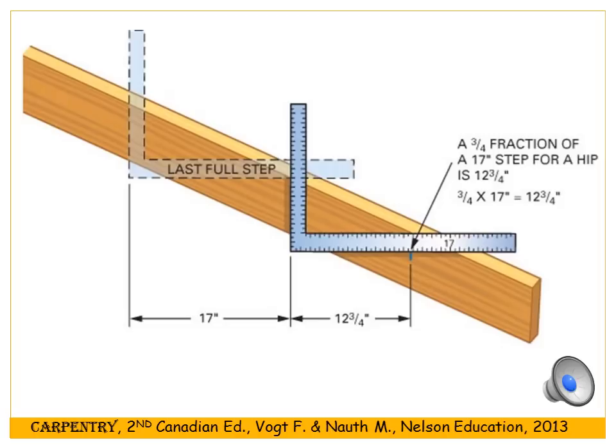To get the length of the rafter, use math or set up the framing square with the unit rise on the tongue and 17 on the body instead of 12. For a 20-foot wide building with a run of 10 feet and a 7-12 slope, set the framing square at 7 and 17 and move it 10 times. That gives the length of the hip rafter. Be careful not to accumulate error each time you move the square.